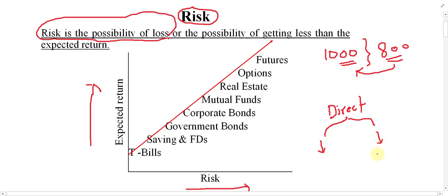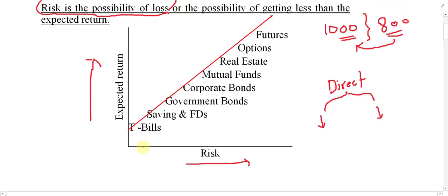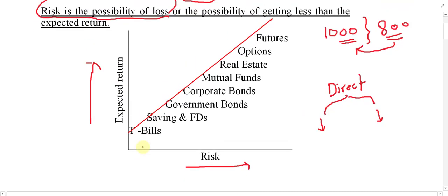Let us take the example of gamblers. In the case of gambling, risk is more, so definitely profit is also more — or return is also more. If it goes on the wrong side, risk is more and you suffer loss. But if it goes on the right side, you make a huge amount of income or gain. So there is a direct relation between risk and return. If you want more profit, you have to accept more risk. If you don't want more risk, you have to accept less profit as well.